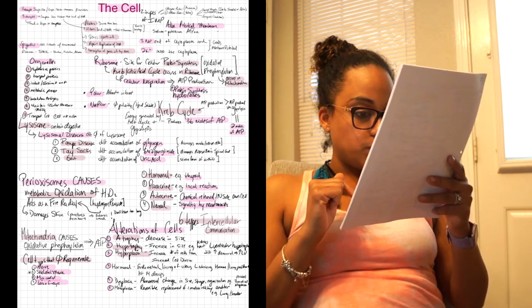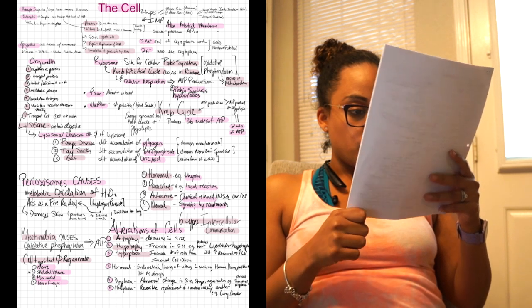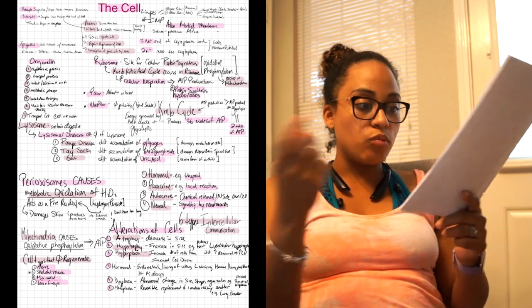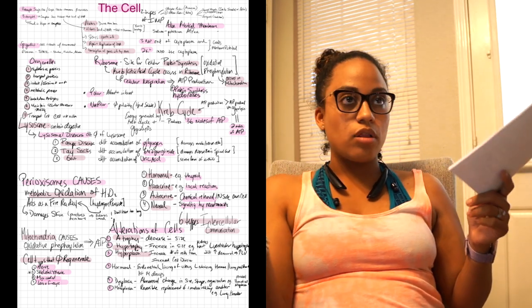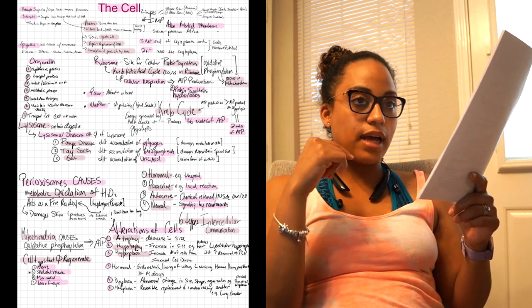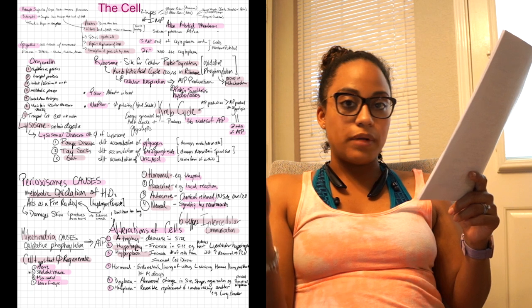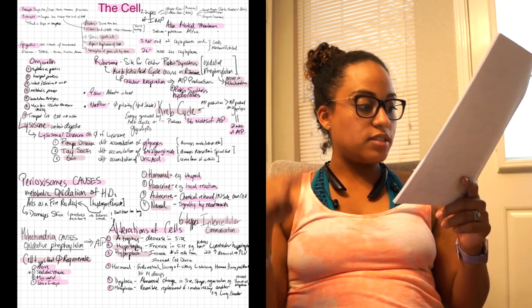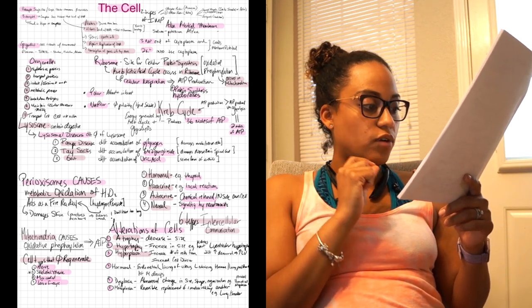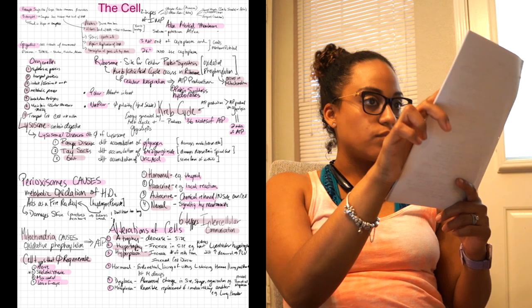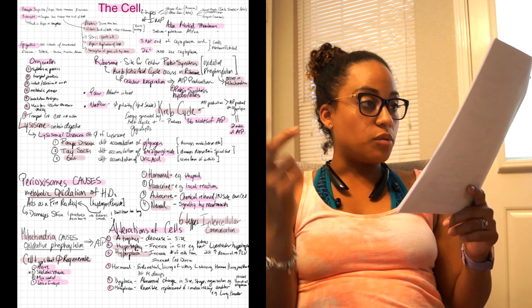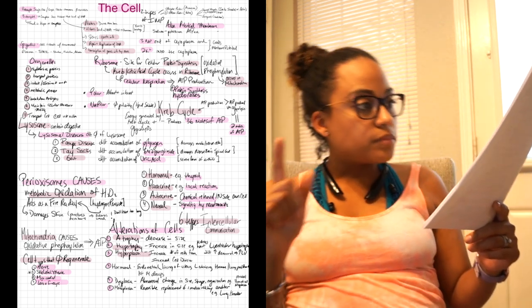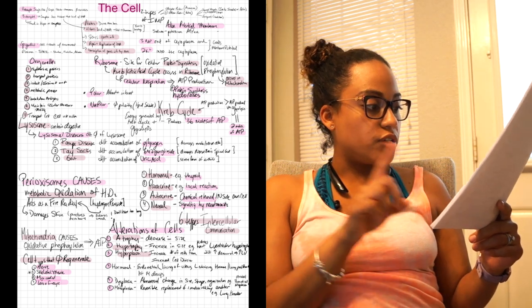Methods of communicating: hormonal, paracrine, autocrine, and neural. Hormonal like the thyroid, paracrine local reaction, autocrine chemical release inside the own cell, and neural signaling by neurotransmitters. So we already talked about mitochondria which causes oxidative phosphorylation, and then we're backtracking that the oxidative phosphorylation occurs in the mitochondria and the protein synthesis occurs in the ribosome.